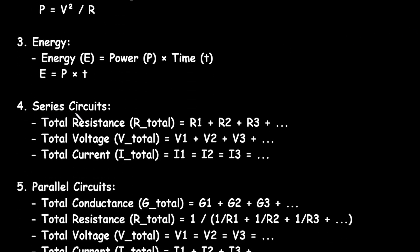Next is series circuits. For series circuits, total resistance R total is equal to R1 plus R2 plus R3, and so on. When resistances are connected in series, we add them. Then next is total voltage V total. It is equal to V1 plus V2 plus V3, and so on. So when voltages are connected in series, they get added.